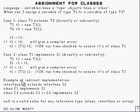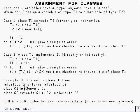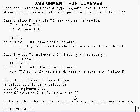What does 'indirect' mean when it comes to implementing interfaces? Here's an example: you've got an interface I1 that extends another interface I2, a class C1 that implements I1, and a class C2 that extends C1. So C2 extends C1, C1 implements I1, and I1 extends I2. If you follow that tree, you can deduce that C2 implements I2 — and it does so indirectly.